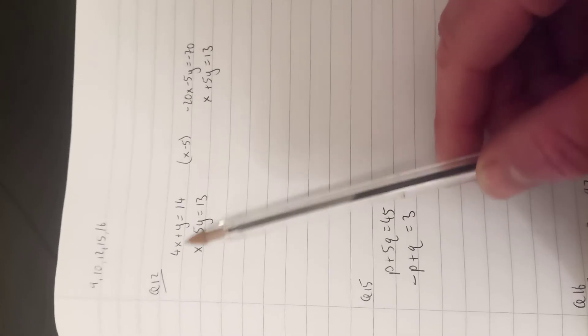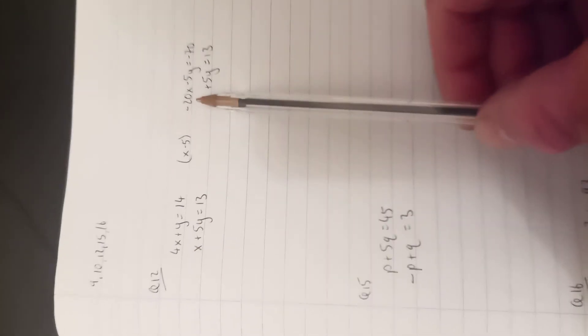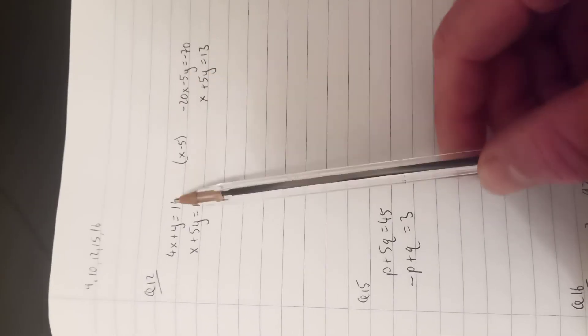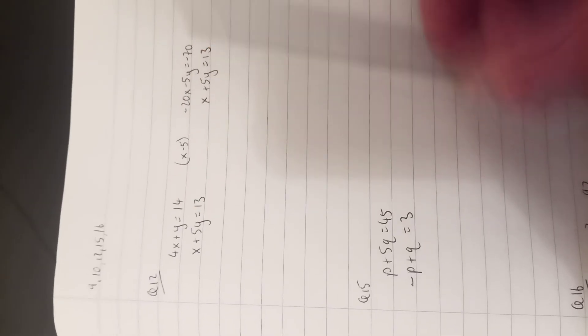So minus 5 by the first term: 4x by minus 5 is minus 20x, y by minus 5 is minus 5y, and 14 by minus 5 is minus 70.